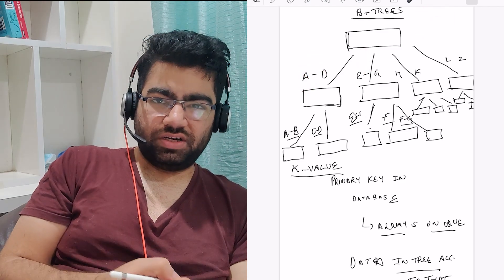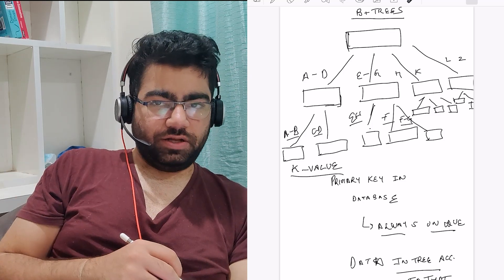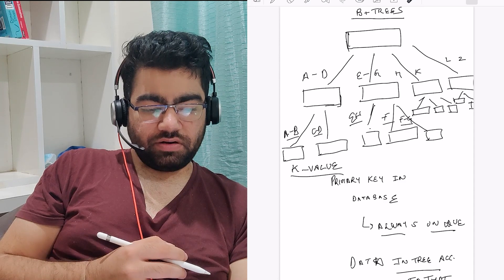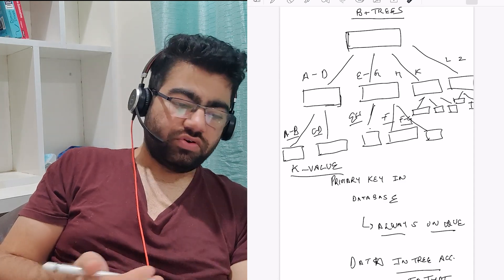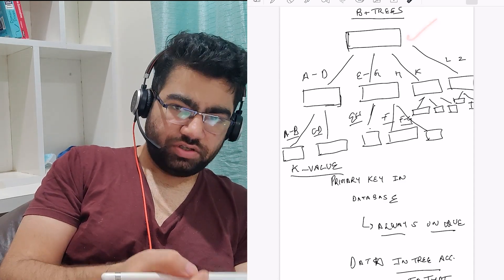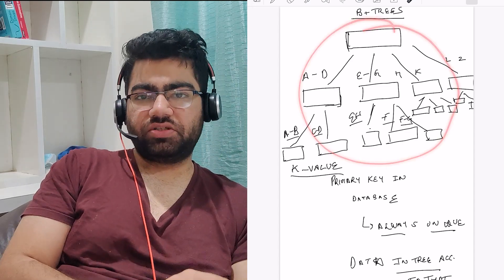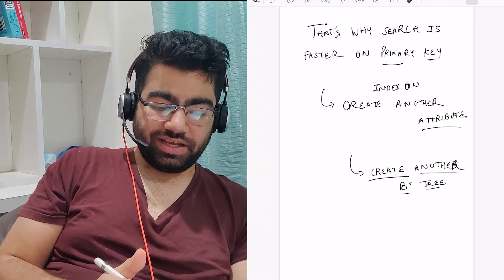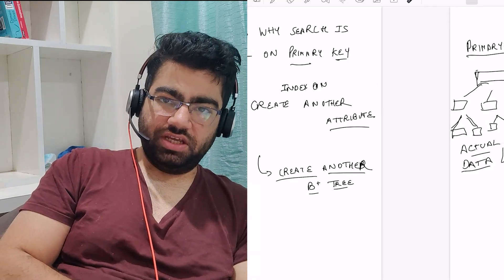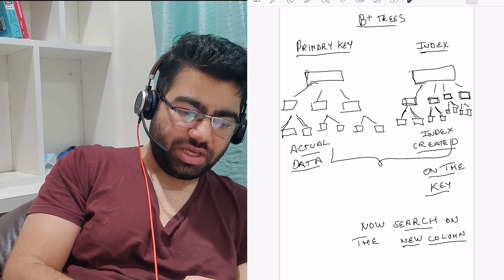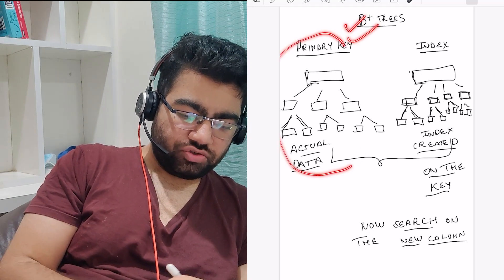Now what would happen when you create an index? It would also have to form a similar structure like this, but how would that happen in this existing B+ tree? The answer is it creates another B+ tree instead of making some changes in the existing B+ tree.